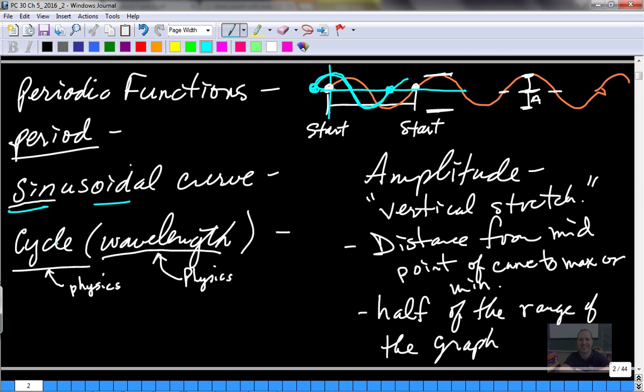The period is one complete cycle. If you think back to physics or physical science, one complete cycle is start to finish or crest to crest. It's also called a wavelength. Amplitude is the A value, y equals A sine theta. That's the distance from the midpoint of the curve to the maximum or the minimum point. It's also half the range of the graph. If you're talking about the range from negative one to positive one, that's a range of two units, so the amplitude would be half of that. The maximum minus the minimum gives your range, and the amplitude is half of that.